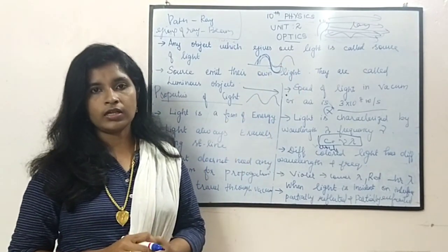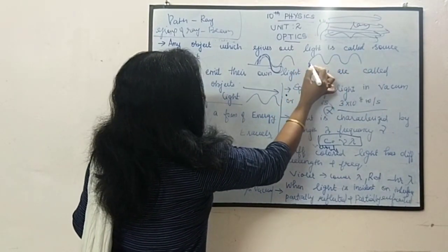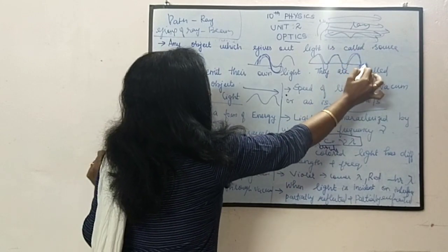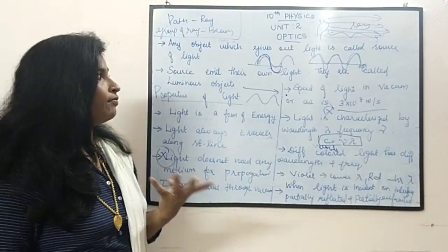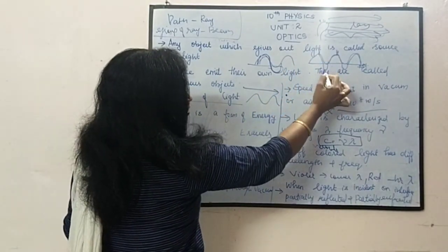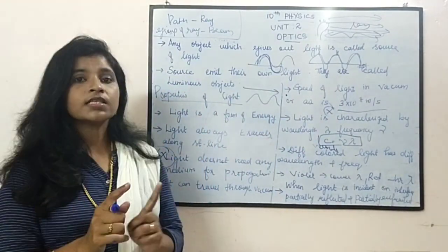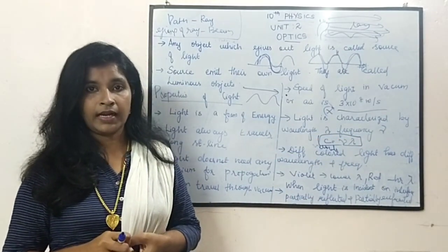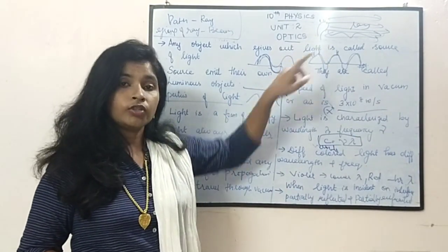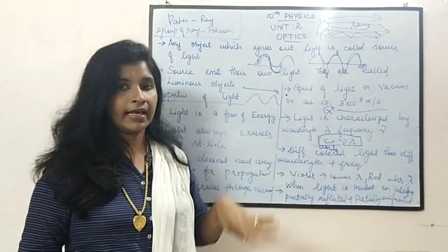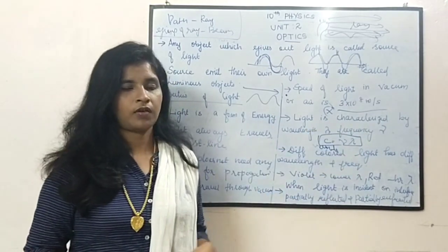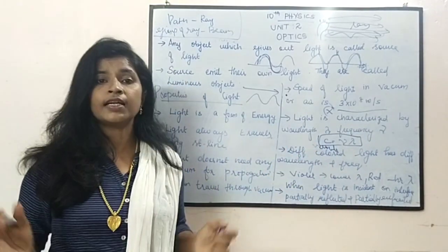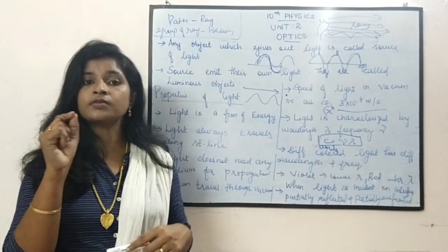Wavelength means the distance between two consecutive peaks or troughs of the wave — that is called wavelength. So the velocity of the light can be determined by the frequency and the wavelength. Different colored light have different wavelength and frequency. All the colors are characterized by their wavelength and frequency.